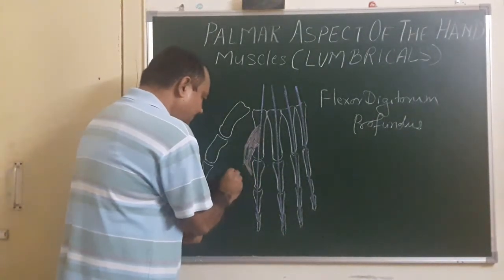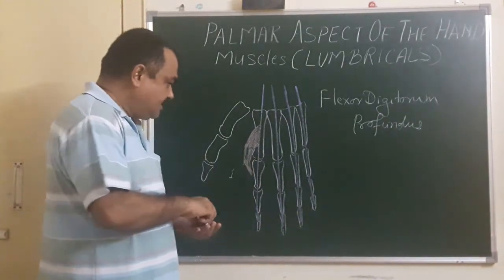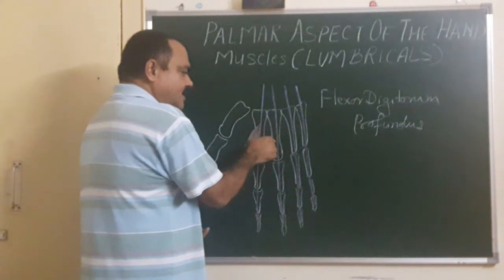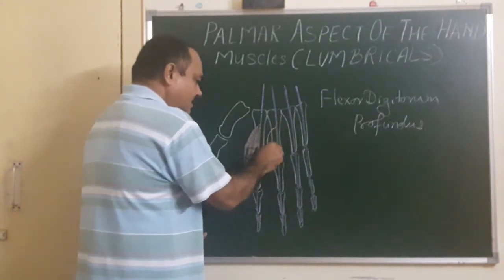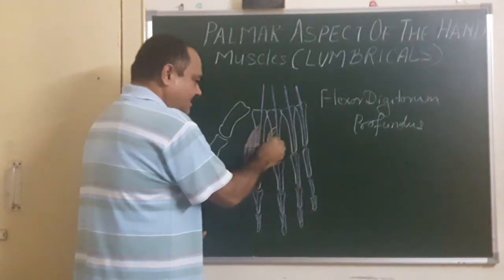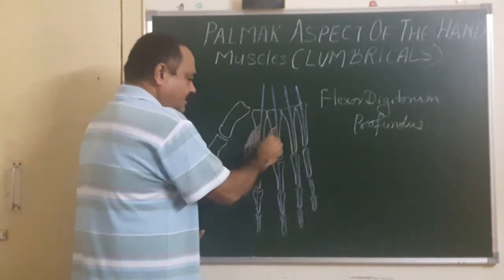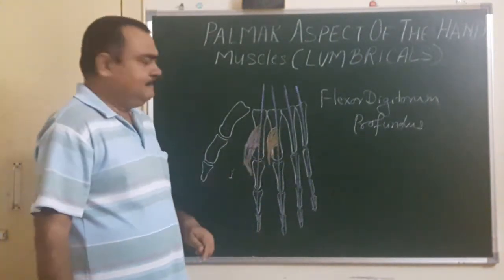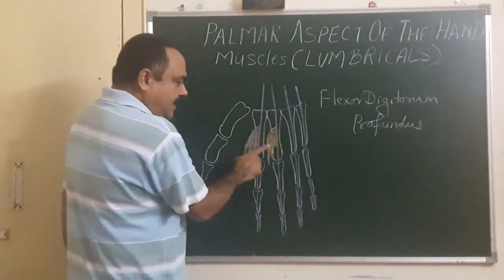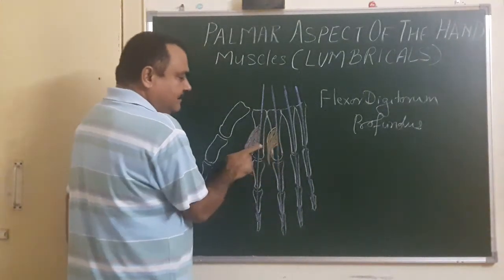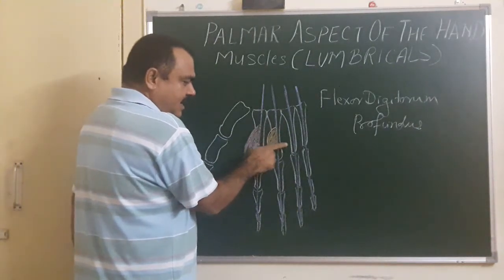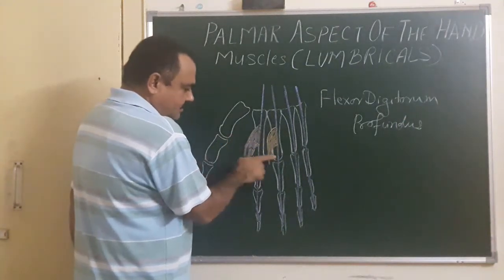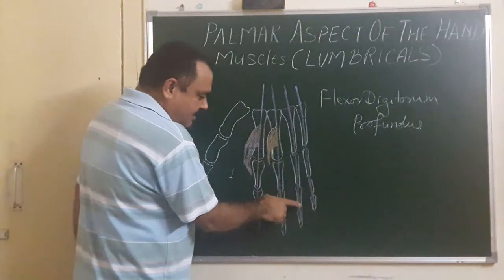This is the second lumbrical, which takes origin from the second tendon. The third lumbrical takes origin from the adjacent sides of two tendons — the tendon of the middle finger and the tendon of the ring finger.